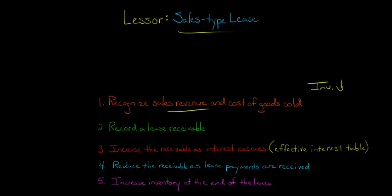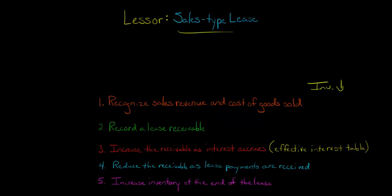If we're crediting revenue, what would we be debiting? We'd be debiting a lease receivable. Over time, we're going to increase that lease receivable as interest effectively accrues on it — we set up an effective interest table and recognize interest over time. The receivable is ultimately reduced when you receive lease payments from the lessee, and at the end of the lease, you'll increase your inventory when you get that leased item back.